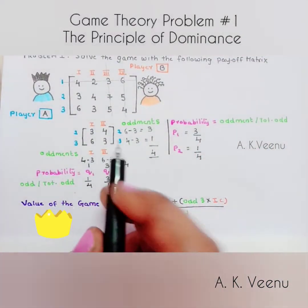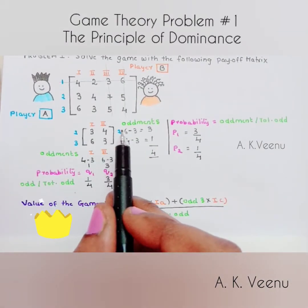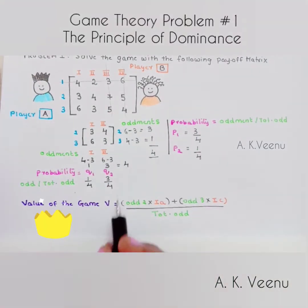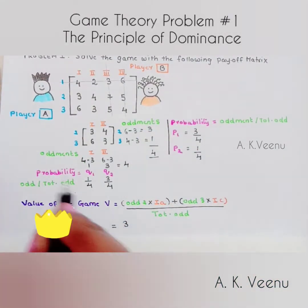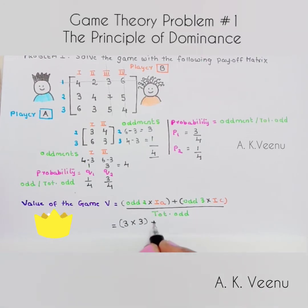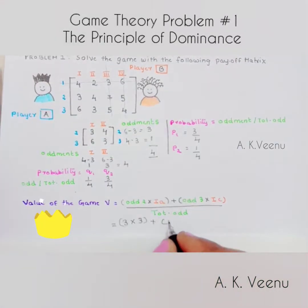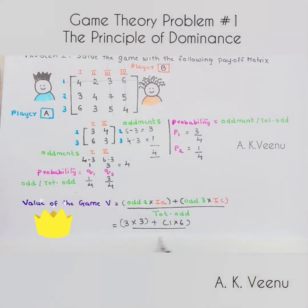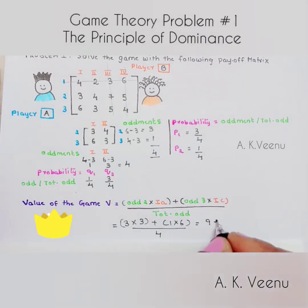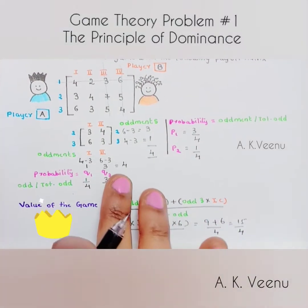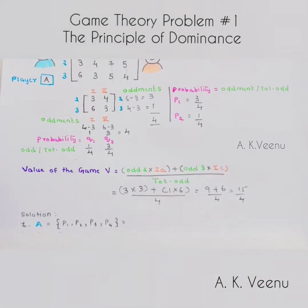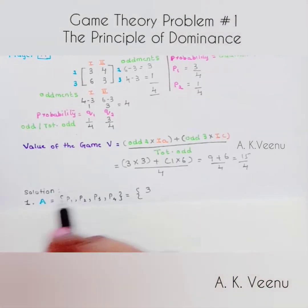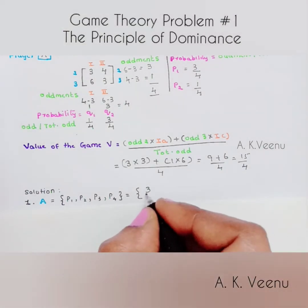To find the value of the game, multiply the oddments into the first column elements and sum them: (3 × 3) + (1 × 6), all divided by the total oddment of 4. That gives us 9 plus 6 divided by 4, which equals 15/4. So the value of the game is 15/4.